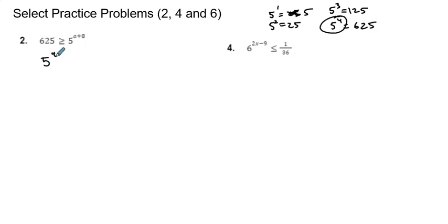So we will go 5 to the fourth is greater than 5 to the a plus 8. Now that we have established this, we can get rid of our bases because they're the same. So we go 4 is greater than a plus 8. And then we will subtract 8 from both sides. This is a very nice and quick problem. This says a has to be less than or equal to negative 4.